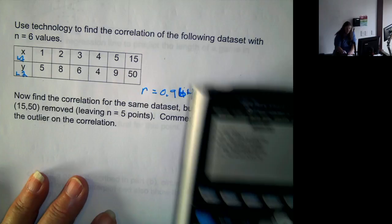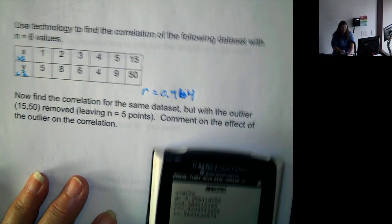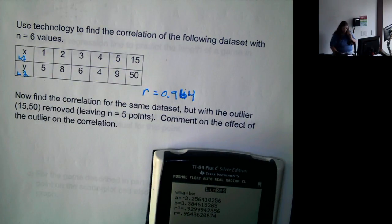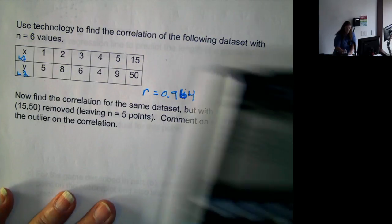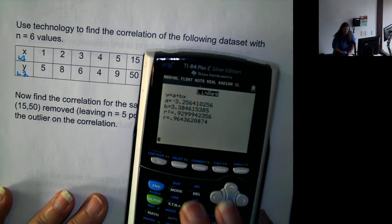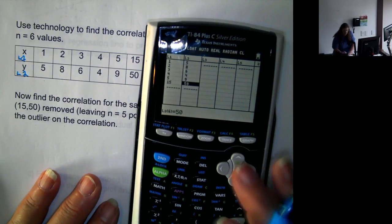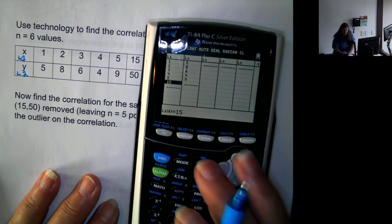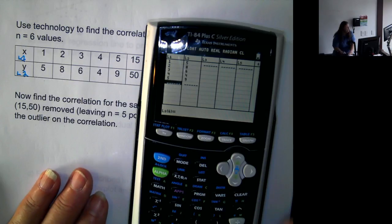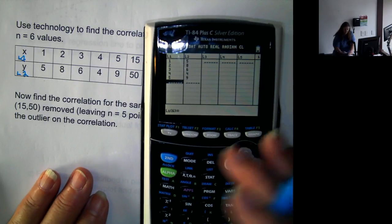Now, we want to find the correlation for the same data set with the last number, the outlier, of 1550 removed. So we're going to go back to edit, and we're just going to delete the last number in each column.